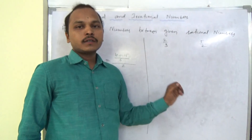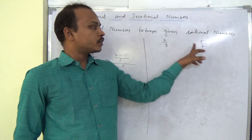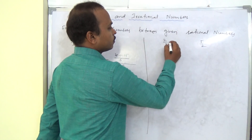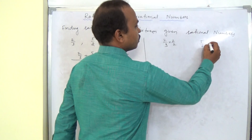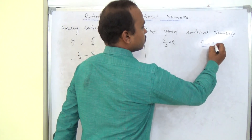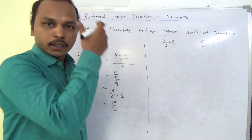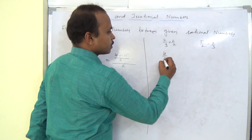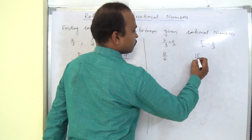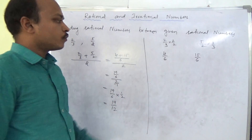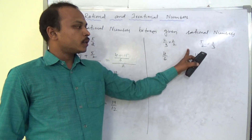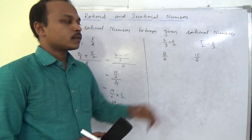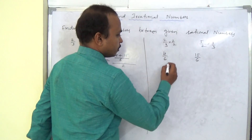The easiest method is to first make the denominators equal. So for 2 by 3, multiply by 2 by 2, and for 5 by 2, multiply by 3 by 3. Now 2 by 3 becomes 4 by 6, and 5 by 2 becomes 15 by 6. Both are rational numbers with the same denominator.